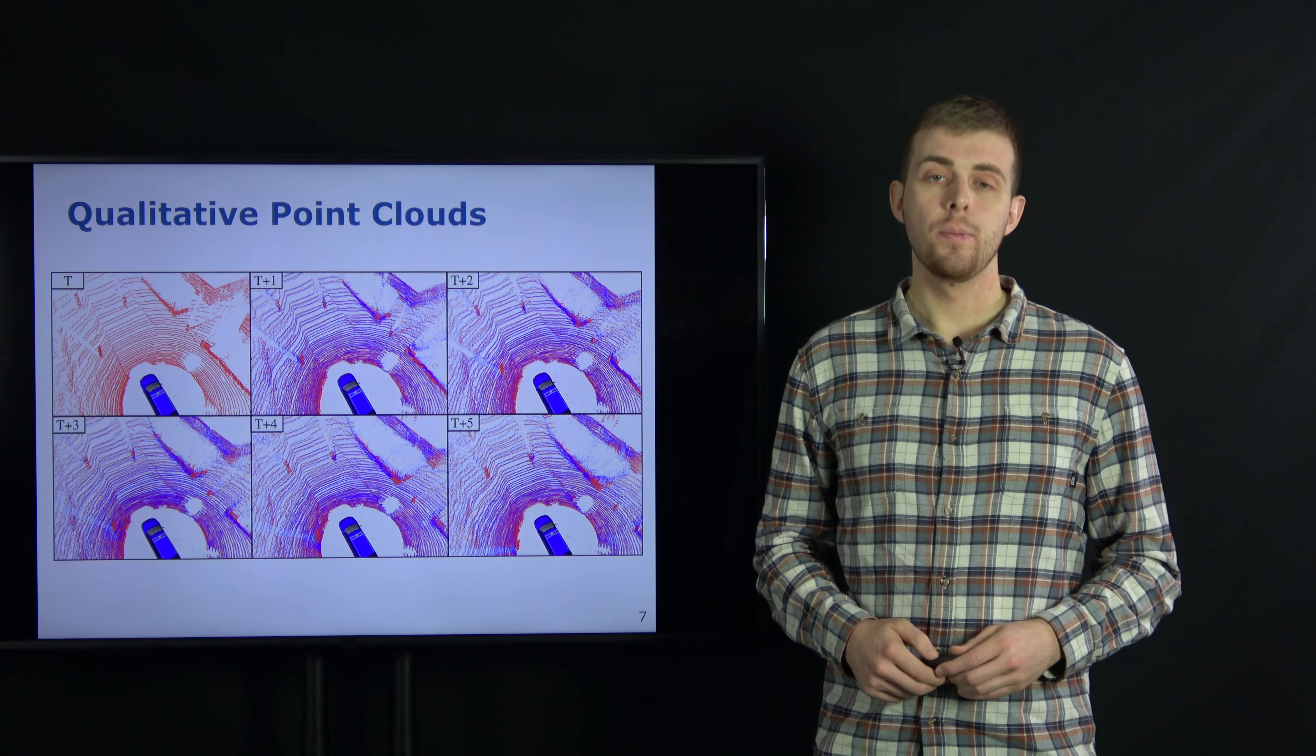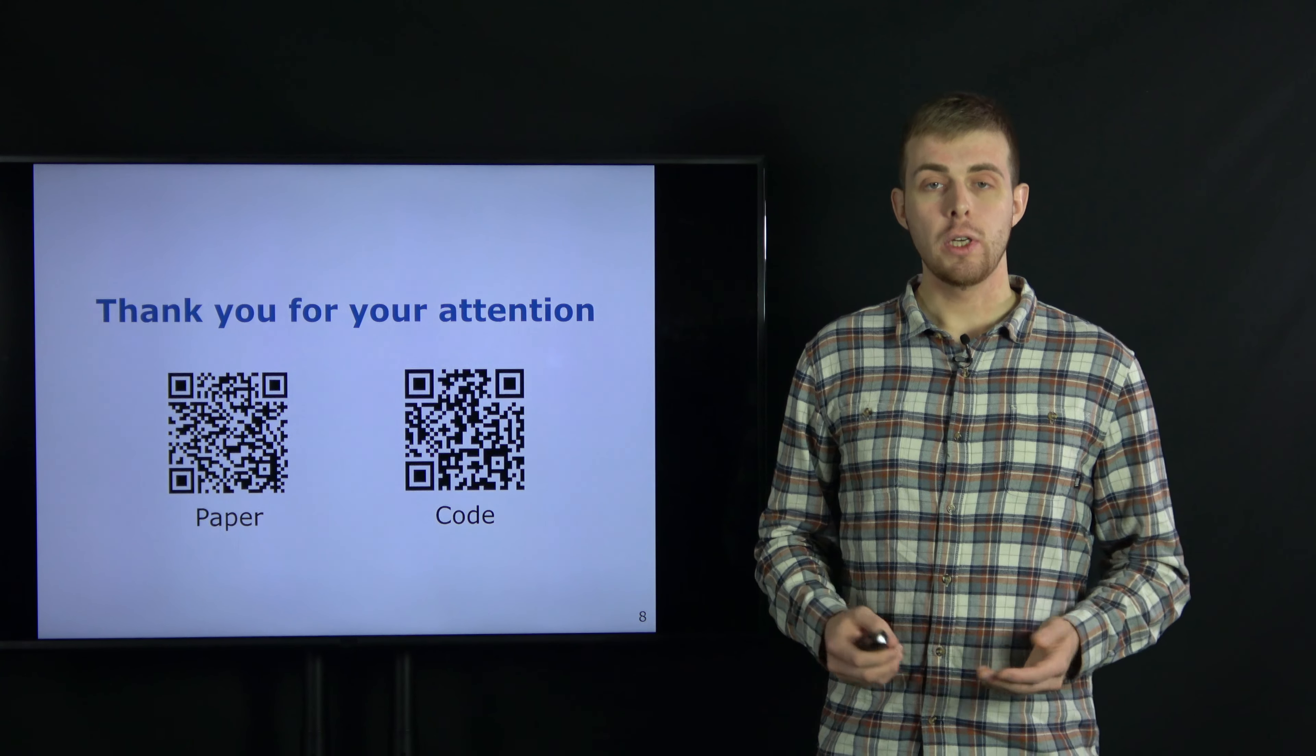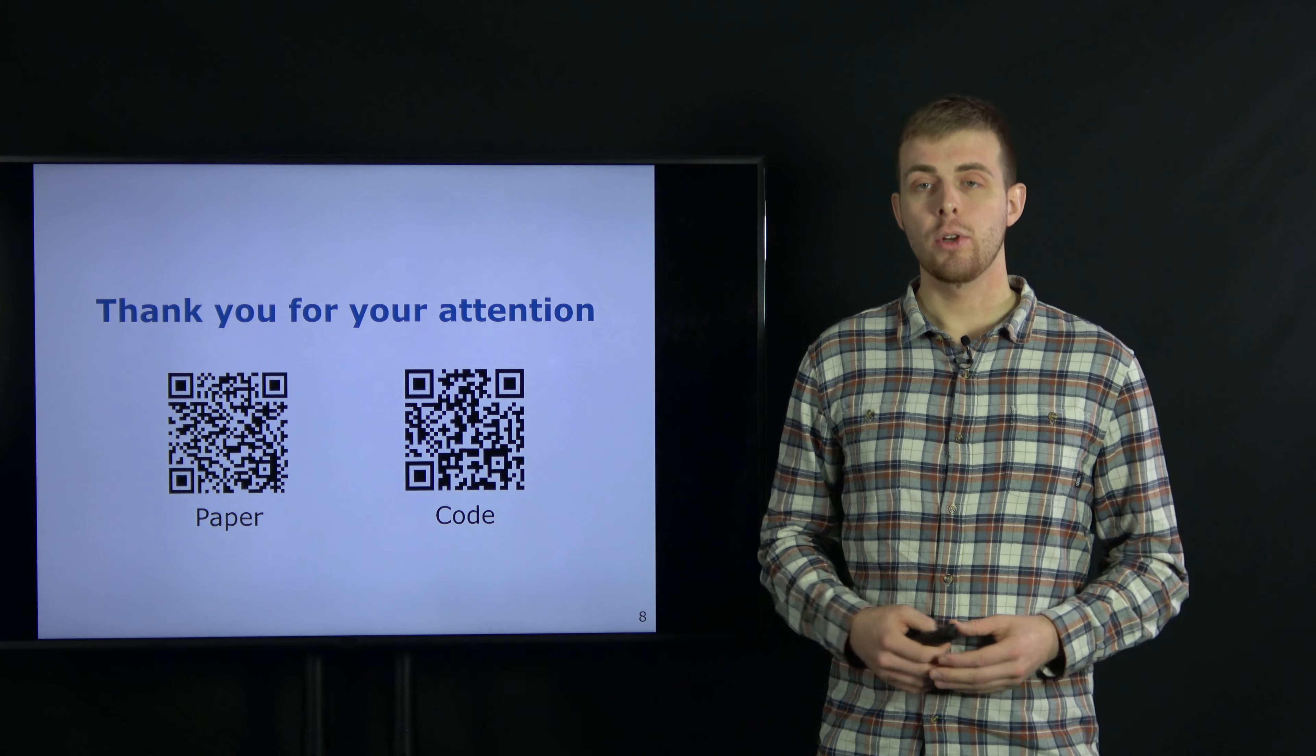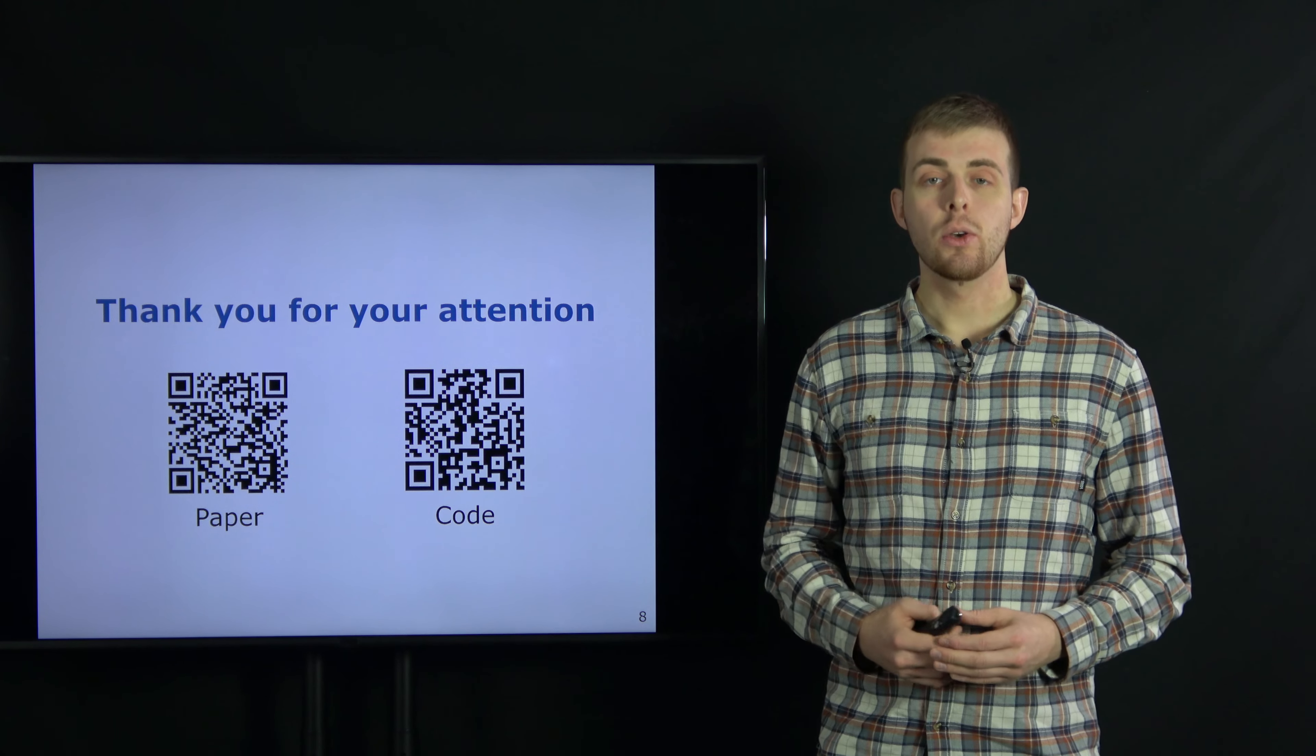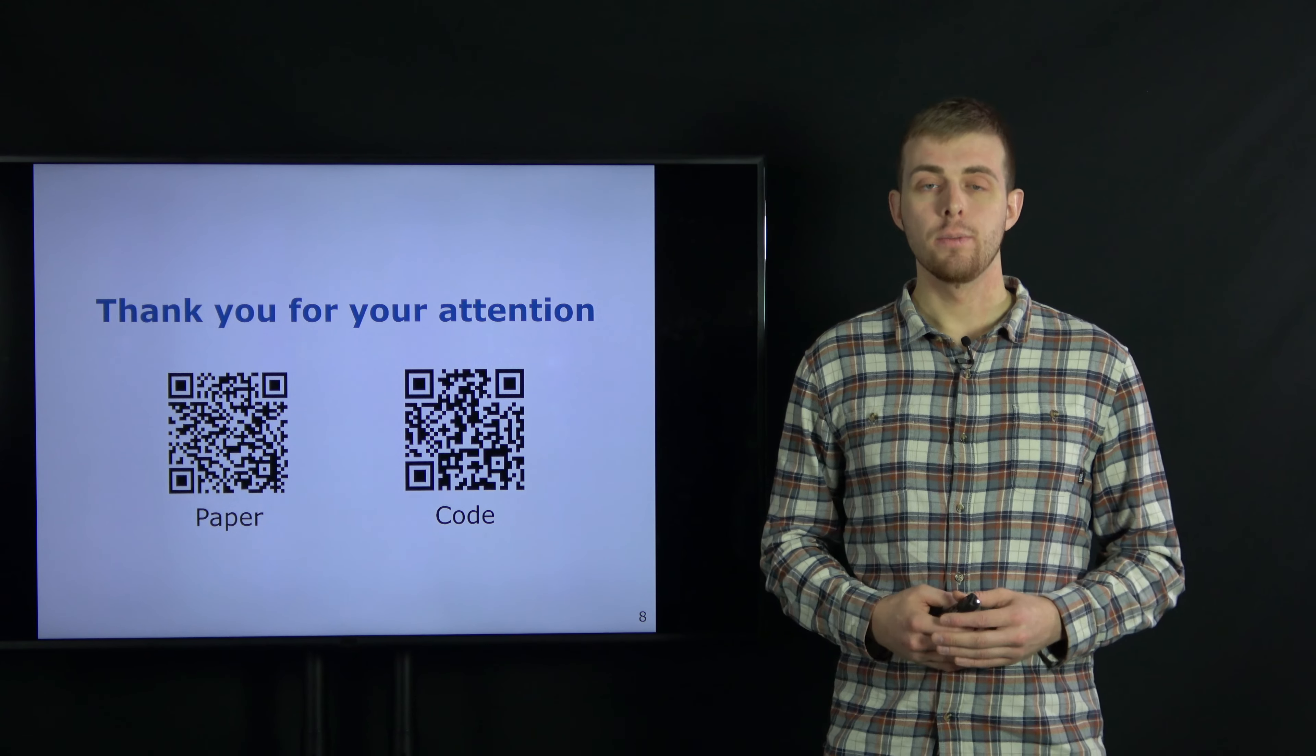This image shows the corresponding 3D point clouds for the previous scene after reprojection. Red is the ground truth, whereas blue is our prediction. One can see that our method is able to predict the future 3D structure of the static scene, as well as the motion of the bicycle in front.